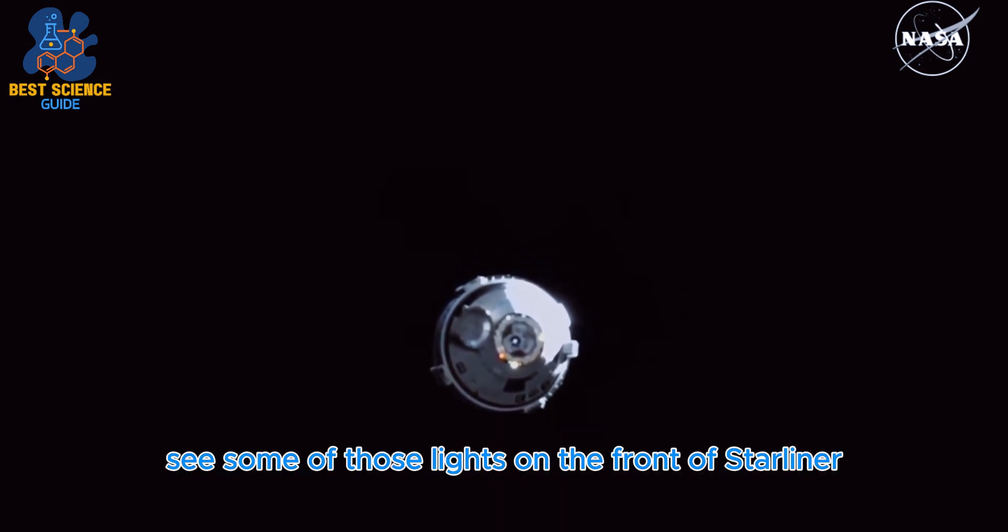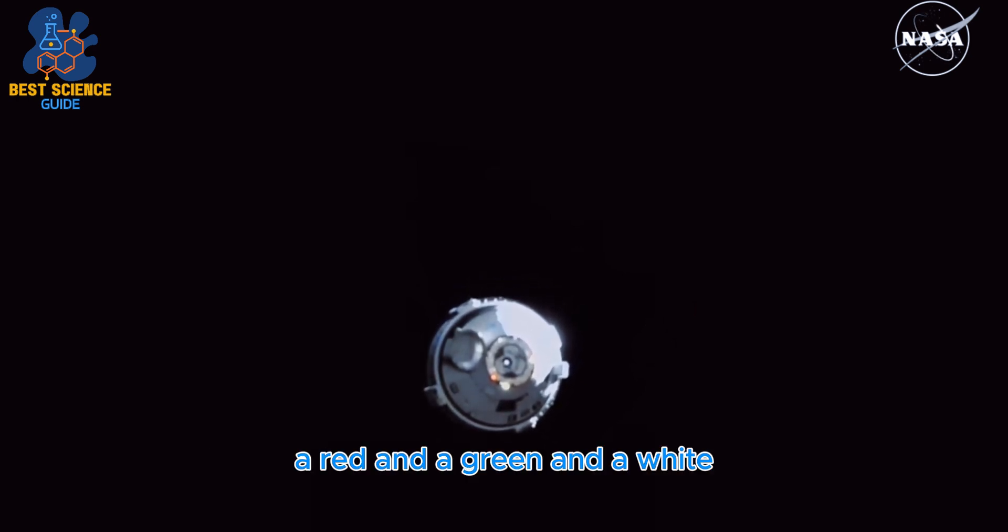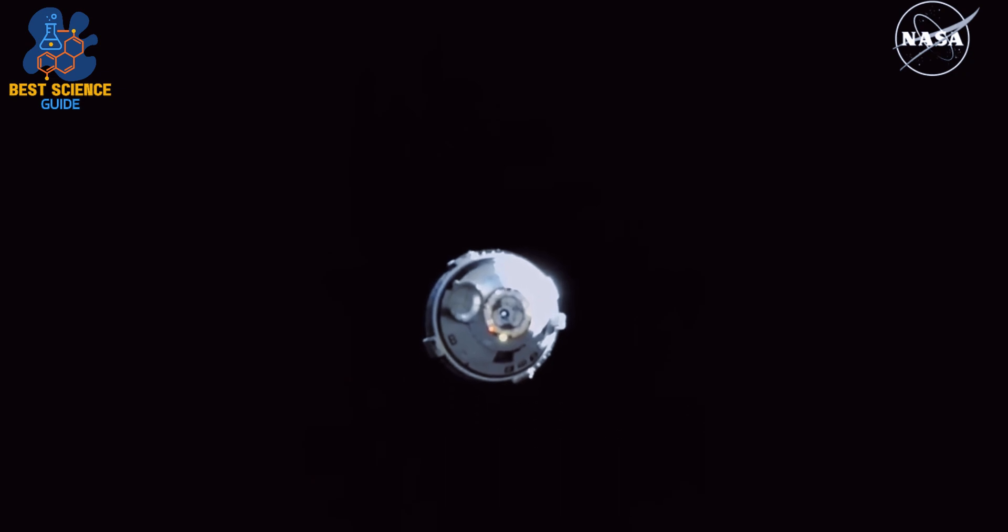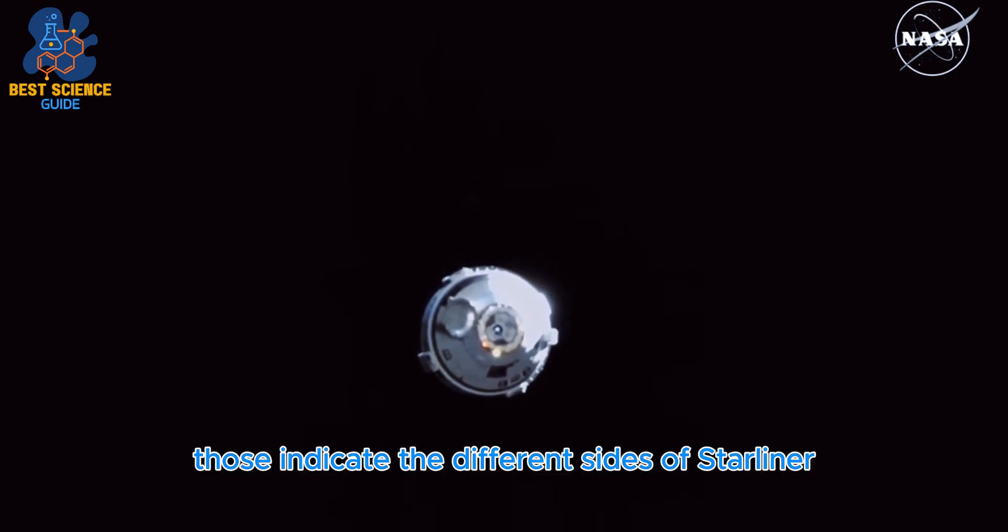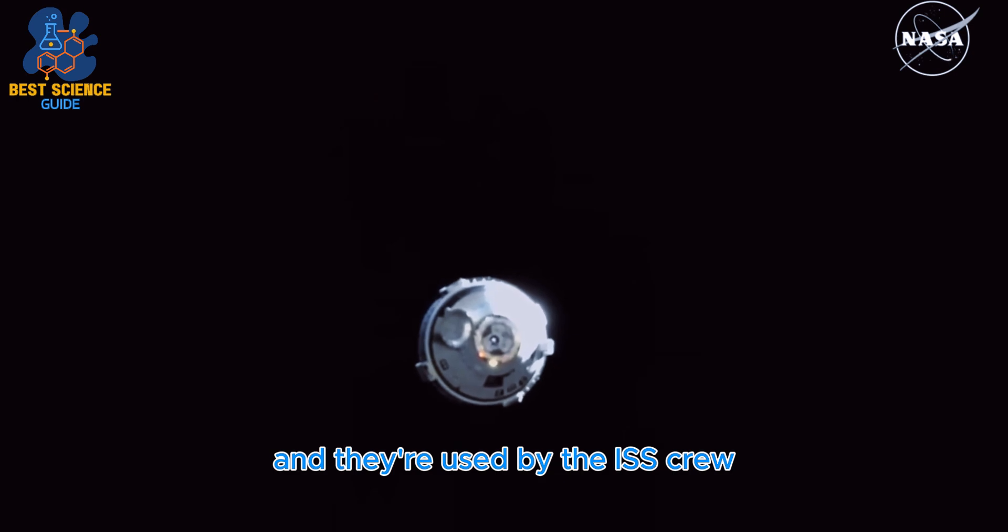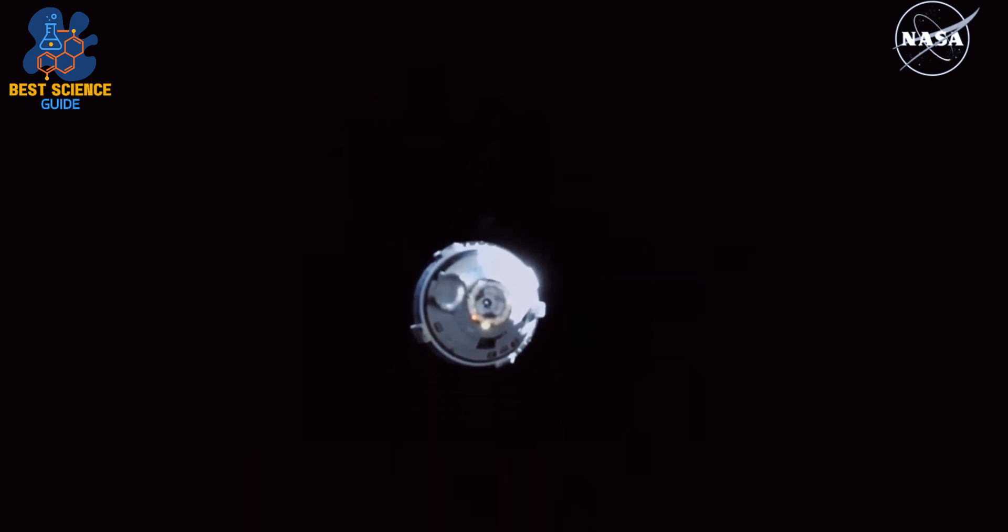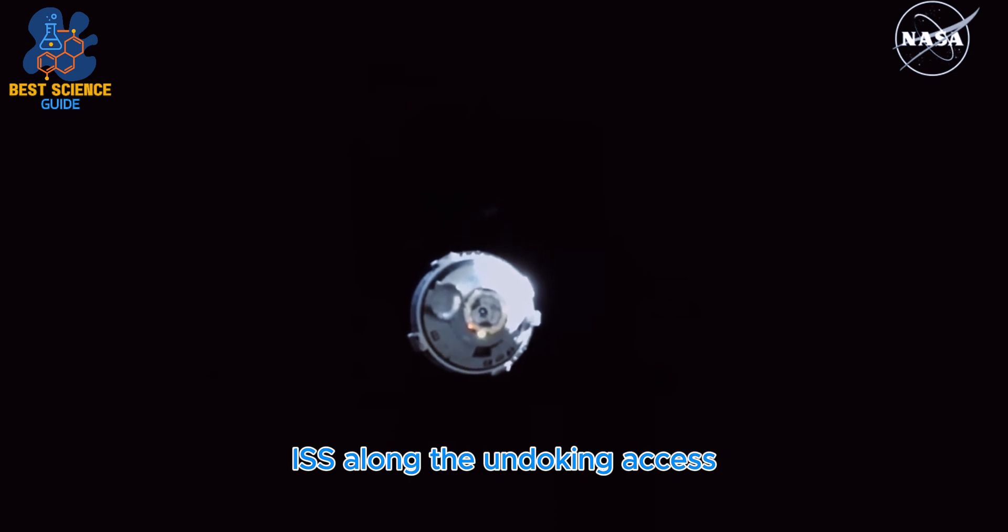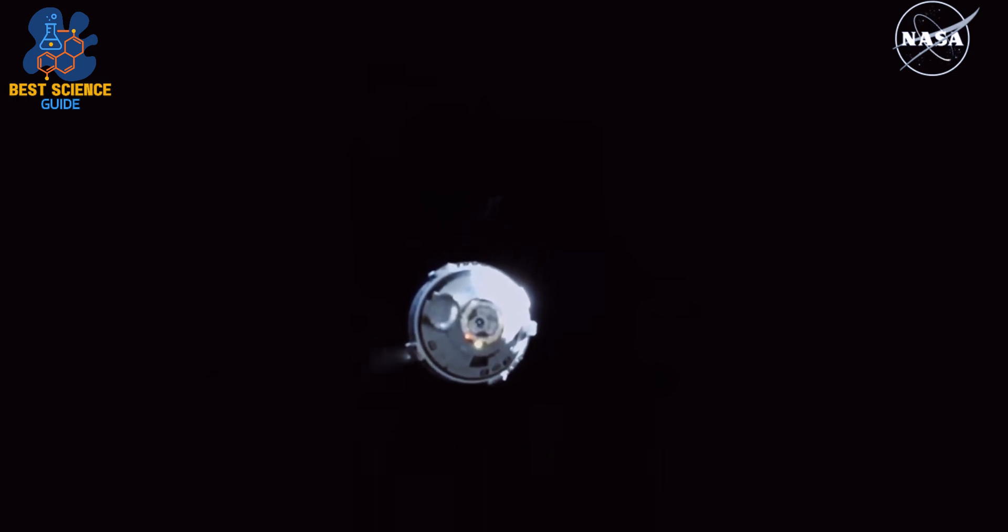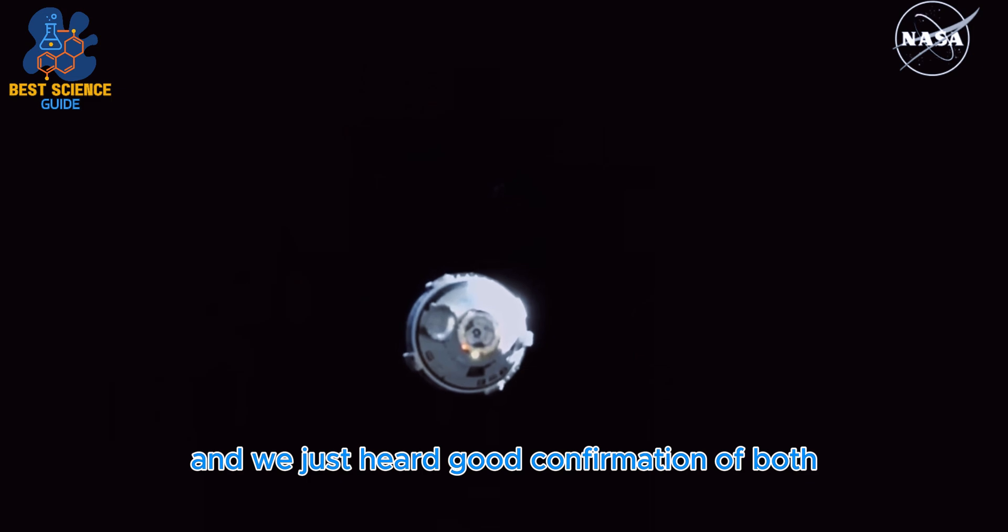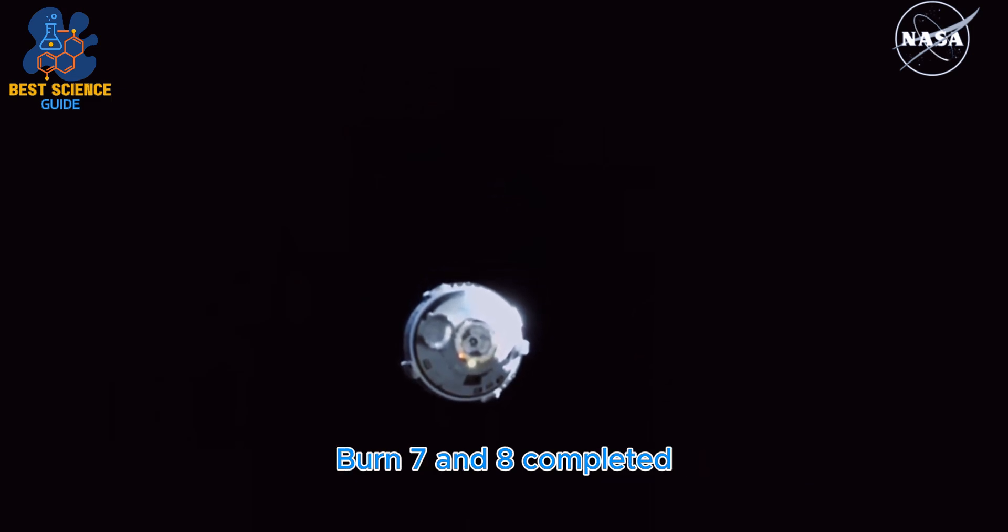You might be able to see some of those lights on the front of Starliner, a red and a green and a white. Those indicate the different sides of Starliner. They're used by the ISS crew to watch Starliner move away from the ISS along the undocking axis. We just heard good confirmation of both burn seven and eight completed.